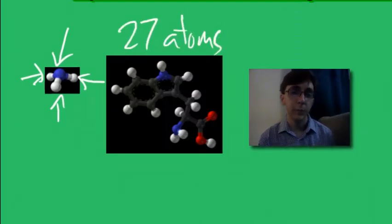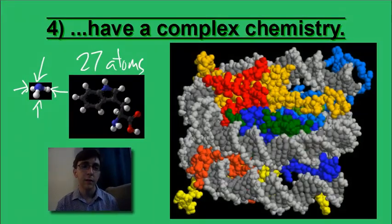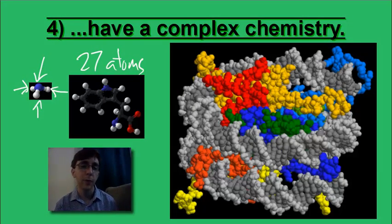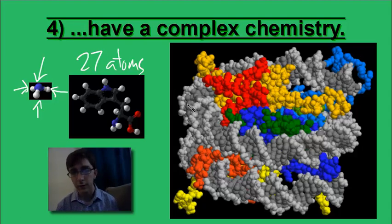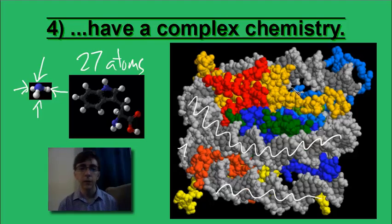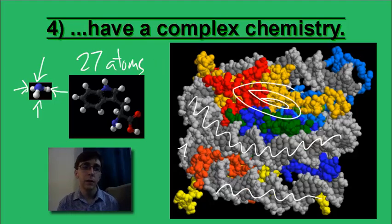It gets even bigger and more complex. This picture shows a group of many macromolecules stuck together. Macromolecules are big molecules. This is a strand of DNA, shown in gray, coiled around a protein, shown in color. It gets even more complicated, or complex, from here.